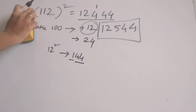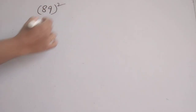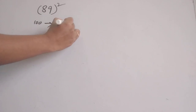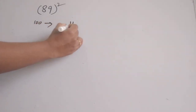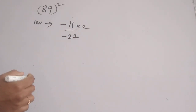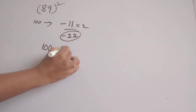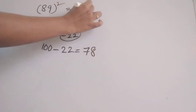Now let's move to one more example: finding the square of 89. We compare with 100 — the difference is minus 11. The double of 11 is 22, so we subtract 22 from 100. 100 minus 22 is 78. We write 78 here.